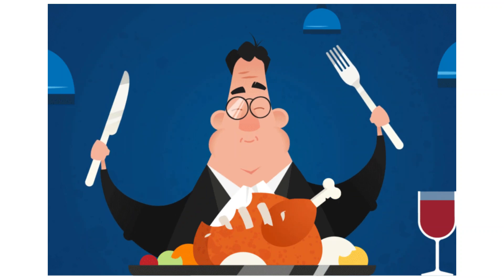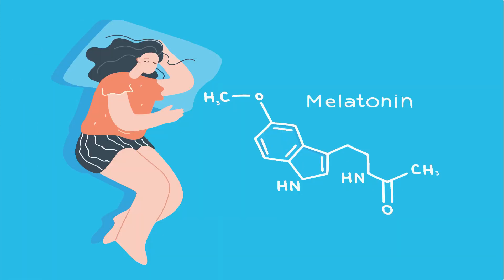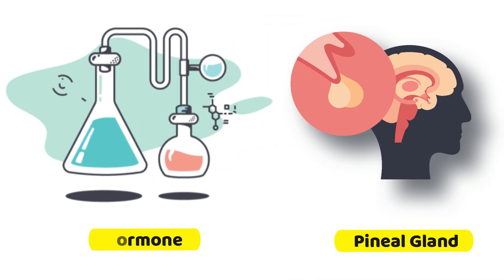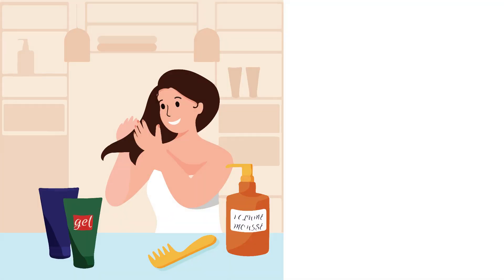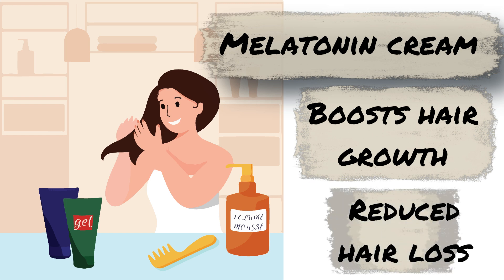But be warned that too much selenium can lead to toxicity. Next is melatonin. Now melatonin is not a nutrient, it is rather a hormone which is secreted by the pineal gland. You may know melatonin as the sleep hormone. A cream with melatonin can also boost hair growth or slow down hair loss.